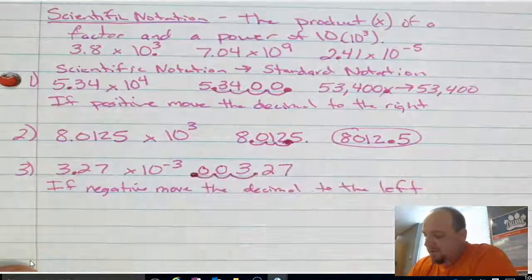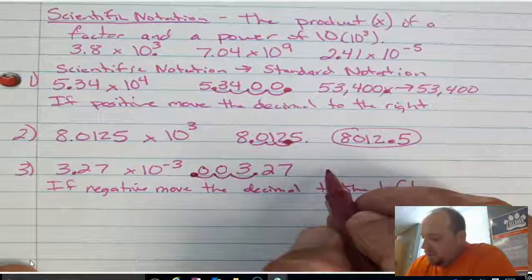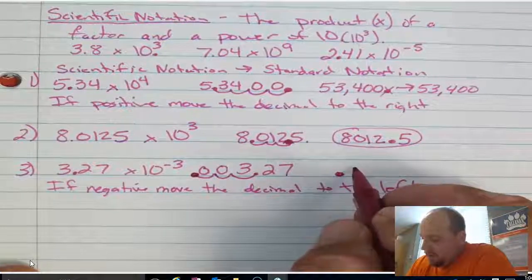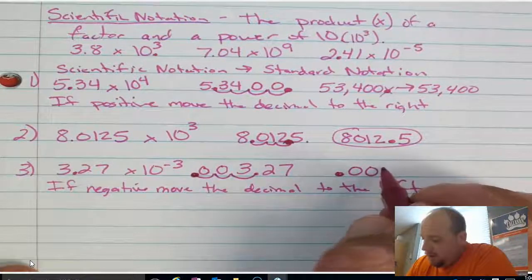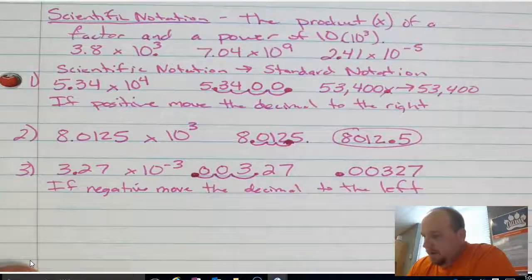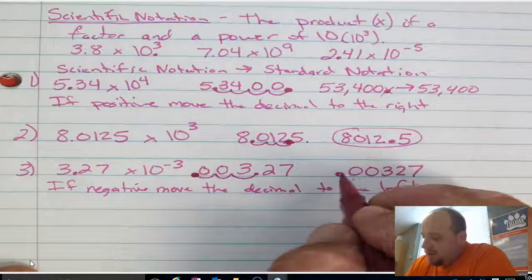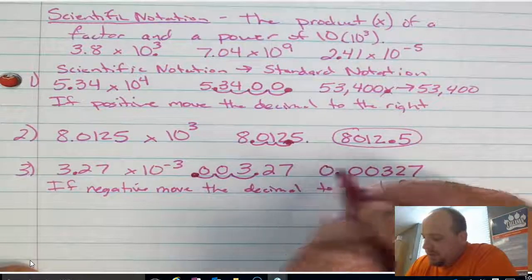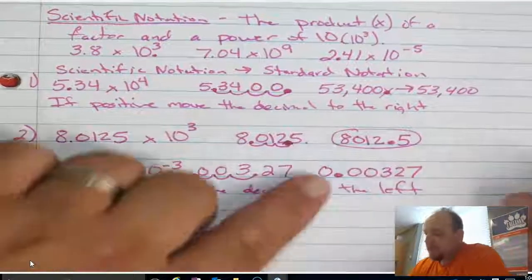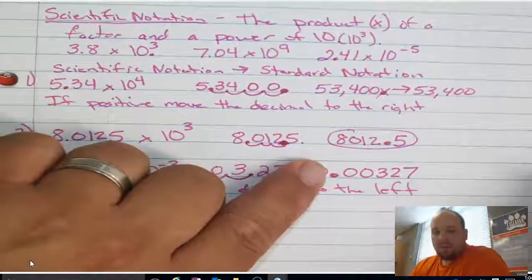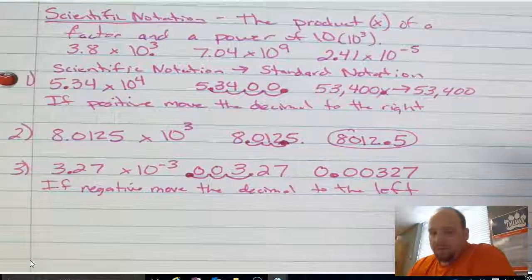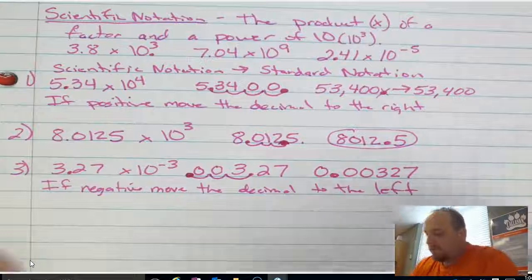Now my decimal is out in front. When I rewrite this, I put the decimal first, then insert zero, zero, three, two, seven — so 0.00327. Sometimes you might see this written with a leading zero to hold the one's place, and sometimes without. Either way is acceptable.